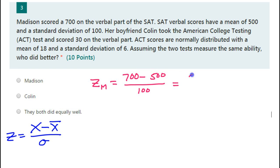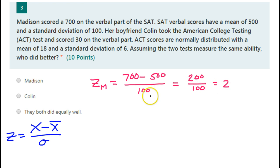700 minus 500 is 200. 200 divided by 100 is 2. I should be fired if I needed a calculator for that.